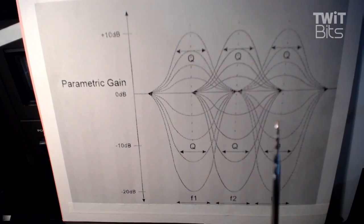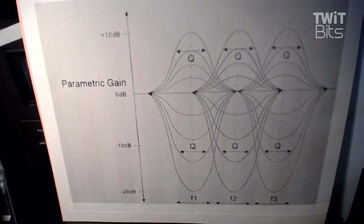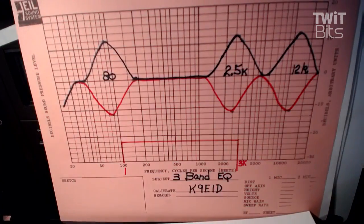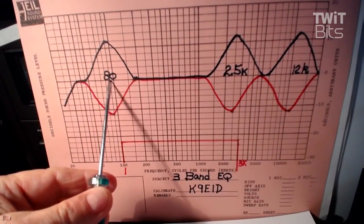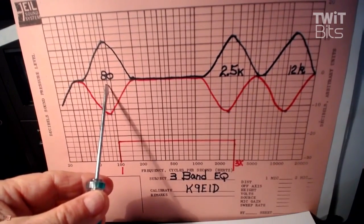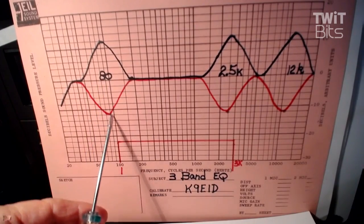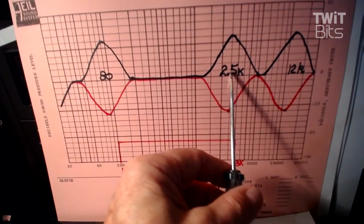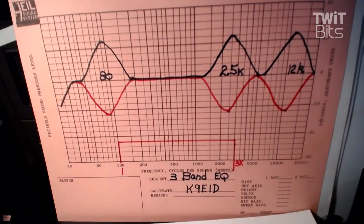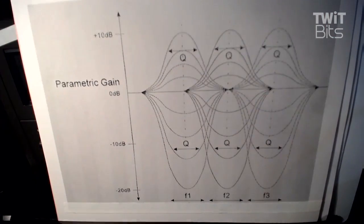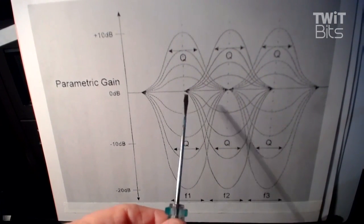We have three filters, just like we had with the fixed band. But with fixed band, when they design the equalizer, the engineer puts the low at 80 — usually around 80 or 100 — and you can't change that. All you can do is change the boost or notch. You can't change where the 2.5K filter is. But with parametric, you are the engineer, and you can move these filters.